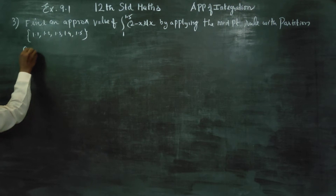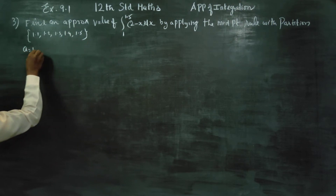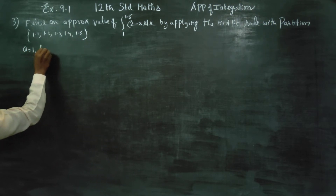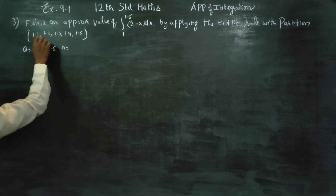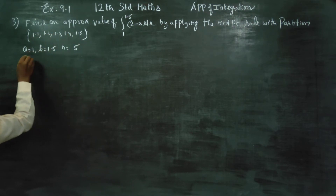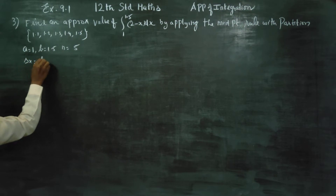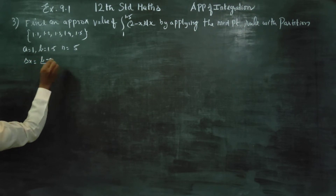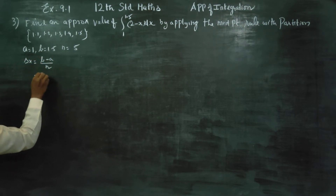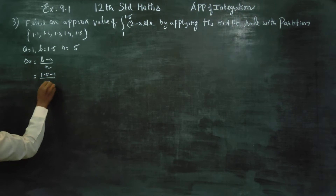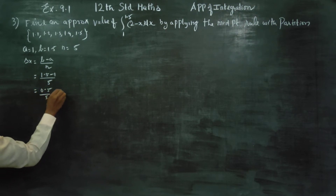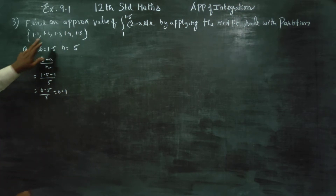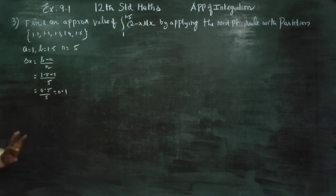Number of partitions n is equal to 5. Lower limit A is equal to 1, upper limit B is equal to 1.5, with 5 partitions. Delta x would be the formula B minus A by N, that is 1.5 minus 1 by 5, that is 0.5 by 5, that is 0.1. So delta x, the partition width, is equal to 0.1.